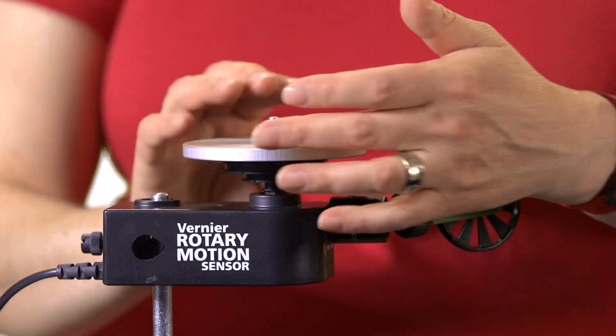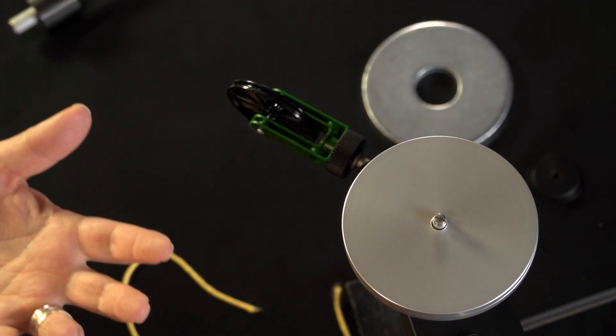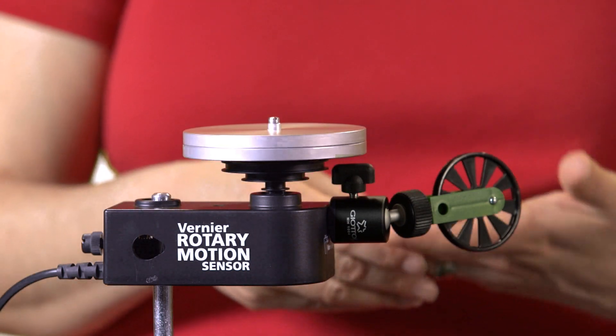You can also examine conservation of angular momentum by starting this going and doubling the moment of inertia by dropping the second disk on and looking at the change in angular velocity.